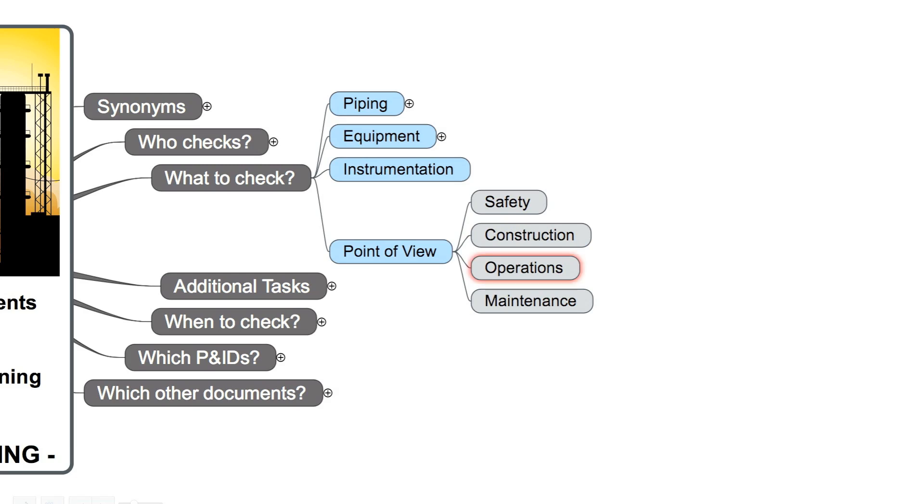Please observe the system from the point of view of an operator. Is it possible to operate this valve or do we need an additional platform? Write these findings down. The same is valid for maintenance works. Is there a hoist over this big motor and pump to remove it or do we have to build a complicated mechanism?